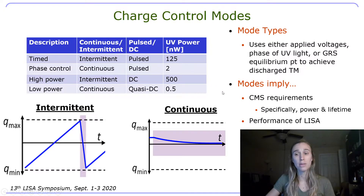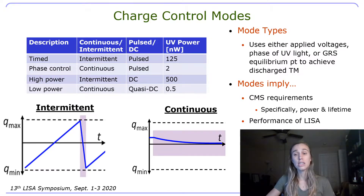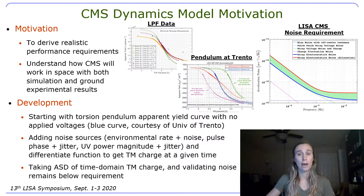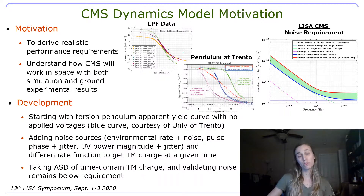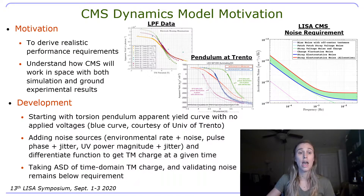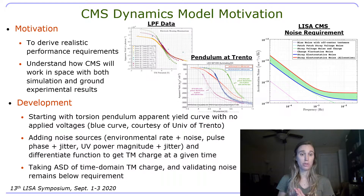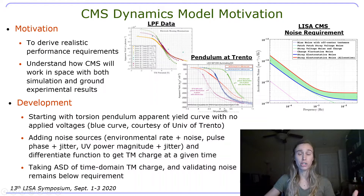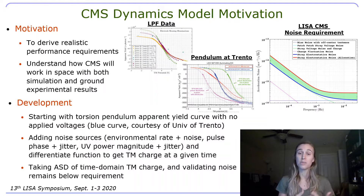These modes imply both the CMS requirements — specifically the amount of UV power needed and the lifetime of these UV LEDs — and they also very strongly imply the performance of LISA. We want to make a charge management system dynamics model in order to derive realistic performance requirements, and to understand how the CMS will work in space with both simulation and ground experimental results. The model development starts with the torsion pendulum apparent yield curve, using data from the pendulum at the University of Trento, which has a GRS very similar to what is planned for LISA.